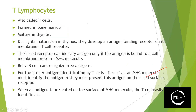T lymphocytes, known as T cells, are also formed in the bone marrow, but they mature in the thymus. Unlike B cells, which mature in bone marrow, T lymphocytes undergo maturation in the thymus. During thymus maturation, T cells develop antigen binding receptors called T cell receptors, similar to how B cells develop antigen binding receptors.